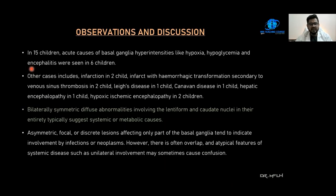In observations and discussion: of 15 children, acute causes of basal ganglia hyperintensities including hypoxia, hypoglycemia, and encephalitis were seen in 6 children. Other cases included infarction in 2 children, infarct with hemorrhagic transformation secondary to venous sinus thrombosis in 2 children, Leigh's disease, Canavan's disease, and hepatic encephalopathy each in 1 child, and hypoxic encephalopathy in 2 children. Bilaterally symmetric diffuse abnormalities involving the lentiform and caudate nuclei typically suggest systemic or metabolic causes. Whereas asymmetric, focal, or discrete involvement of only part of the basal ganglia indicates infection or a neoplastic etiology. However, there is often overlap and atypical features of systemic diseases, such as unilateral involvement, may sometimes cause diagnostic confusion.